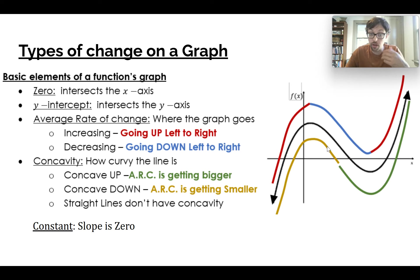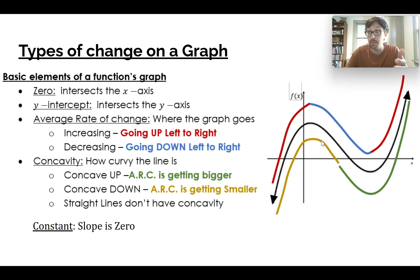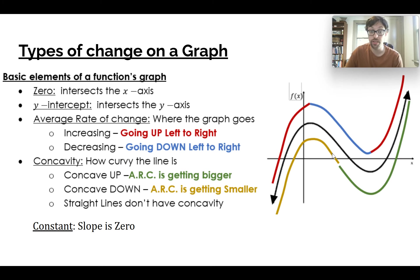Then here our average rate of change is getting smaller — we have a positive average rate of change, it becomes zero, and now it's negative. So this is concave down.